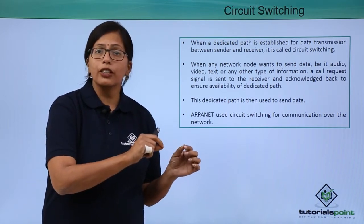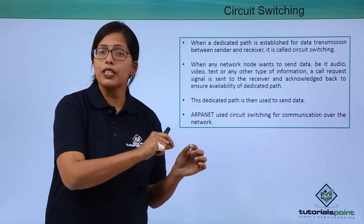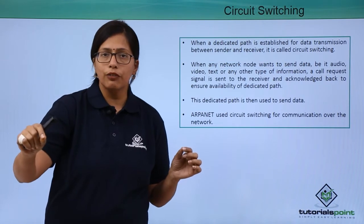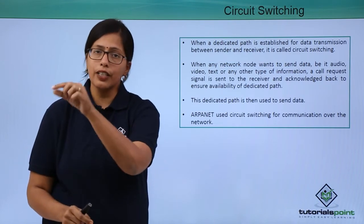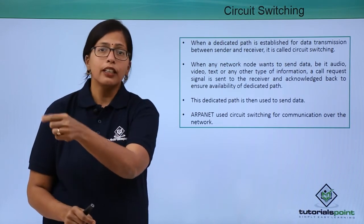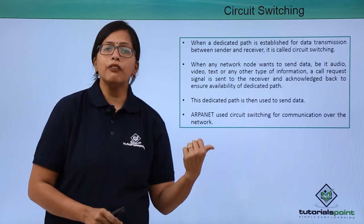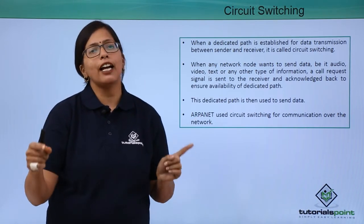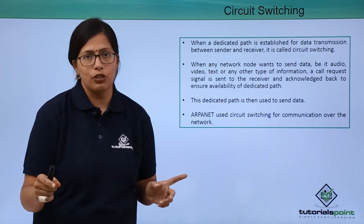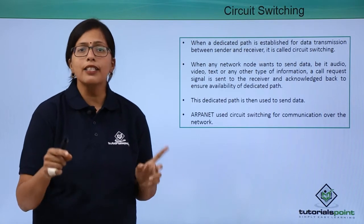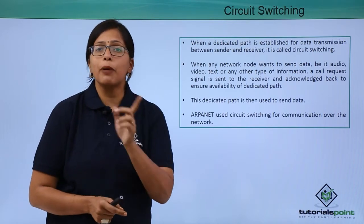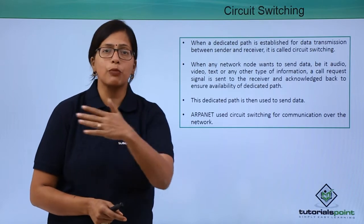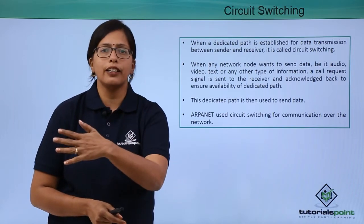That call request message will travel through the mesh of networks and reach node 2. When it is acknowledged, that acknowledgement will come back to node 1 and finally that circuit will be established. That dedicated path is established before actual transmission of data can take place.